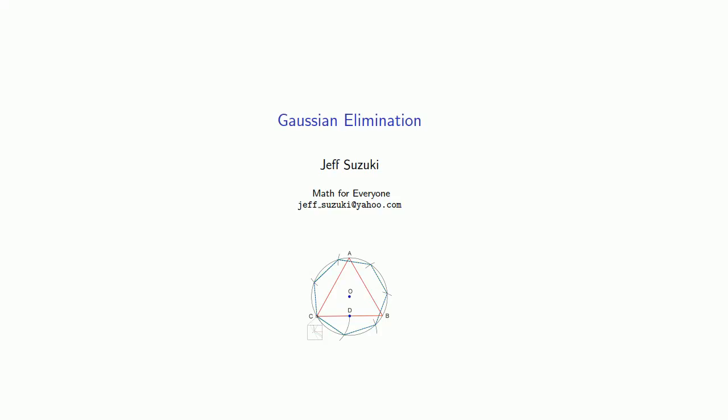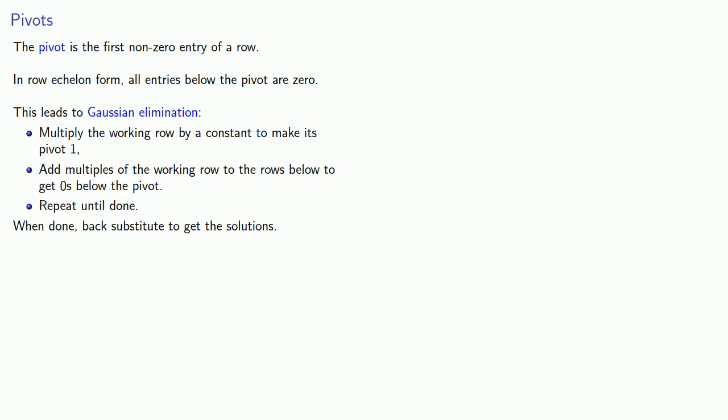Elementary row operations can be used to produce the row echelon form of a matrix using Gaussian elimination. Remember our main steps in Gaussian elimination: multiply the working row by a constant to make its pivot equal to 1, add multiples of the working row to the rows below to get zeros below the pivot, repeat this process until we've produced the row echelon form of the matrix, and then use back substitution to get the actual solutions.